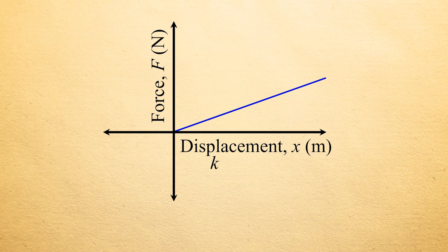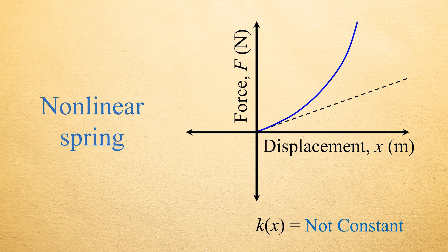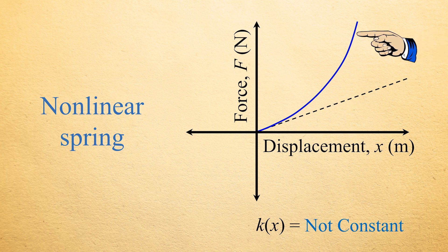It's important to recognize that not all springs produce resisting forces that increase linearly as they are displaced. If the stiffness K of a spring does not remain constant over its intended range of deformation, then the spring is said to be non-linear and it will produce a force displacement plot that is no longer a straight line.